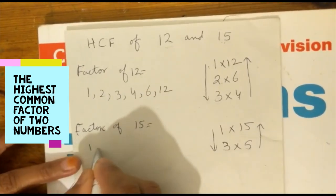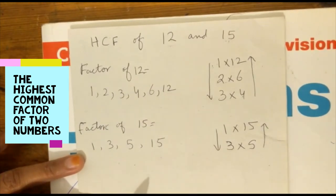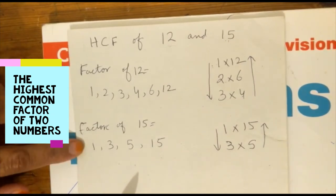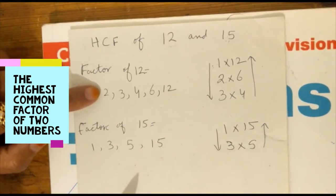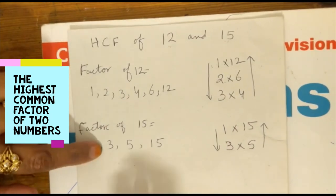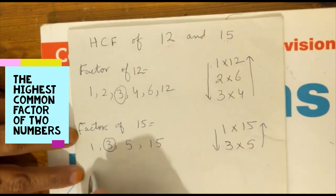Now we will see which factors match. We will not count 1. 2 is in 12 but not in 15. 3 is here and 3 is here. 3 is the highest common factor for this question.